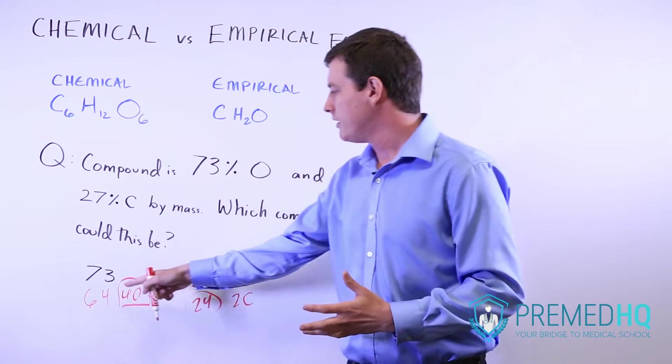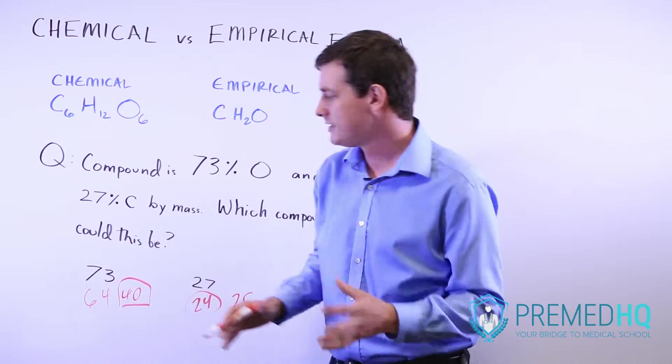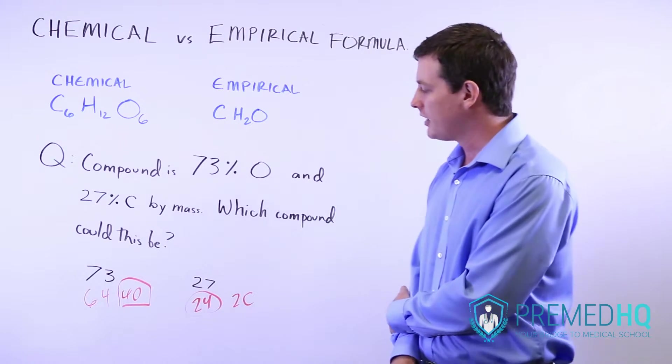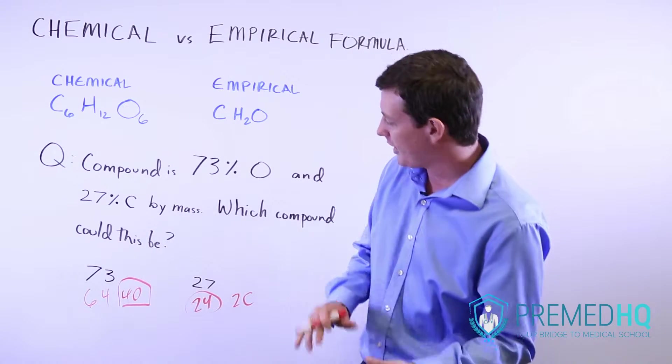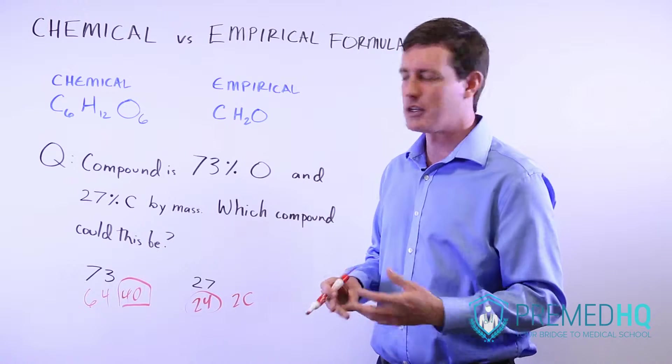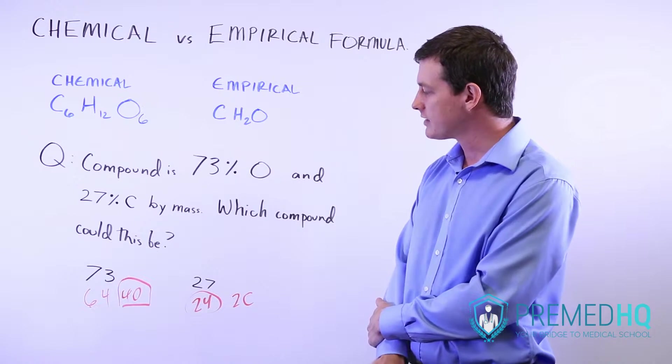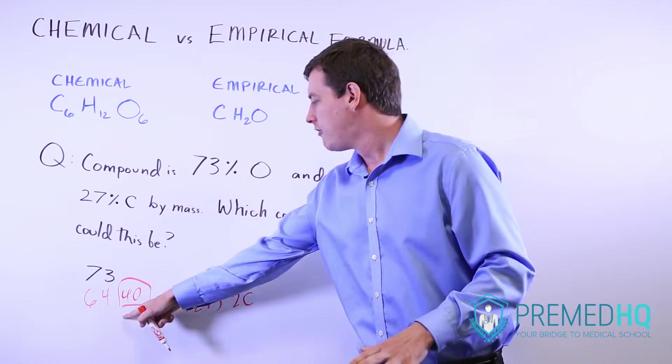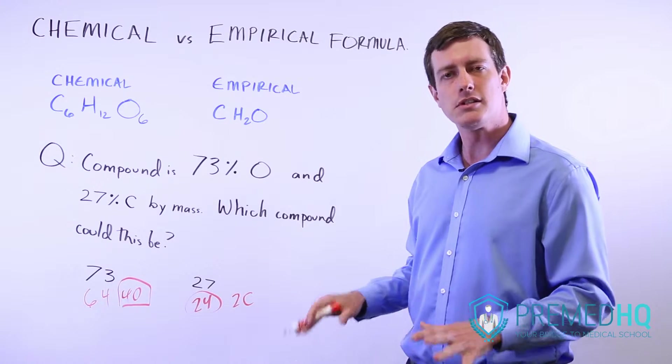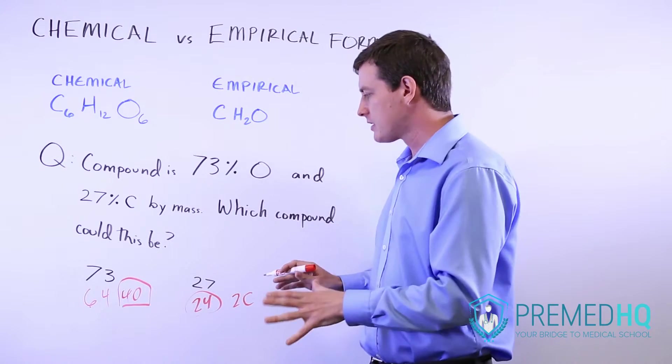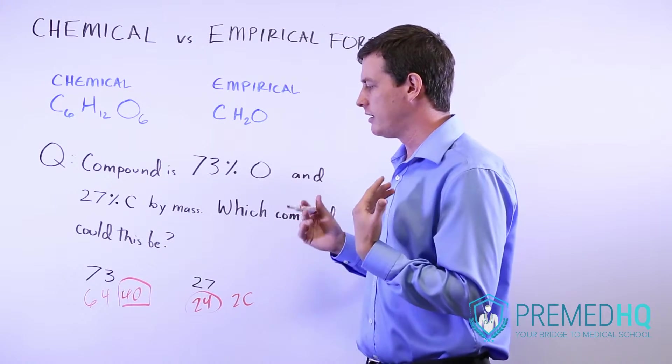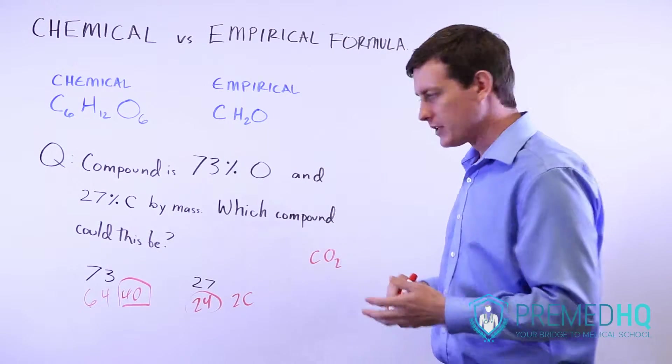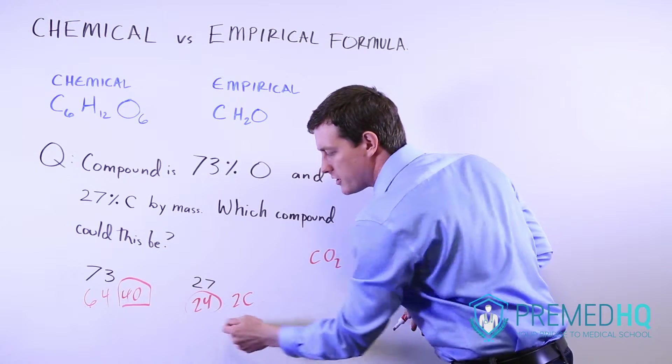Notice that with 4 oxygens, we get up to 73%, and with 2 carbons we get to 27%. We're looking at something with 4 oxygens and 2 carbons. We then simplify that into an empirical formula of CO2 - there are 2 oxygens per carbon.